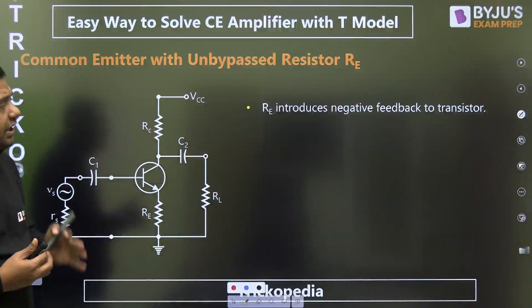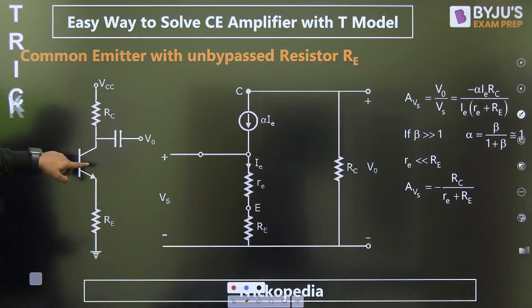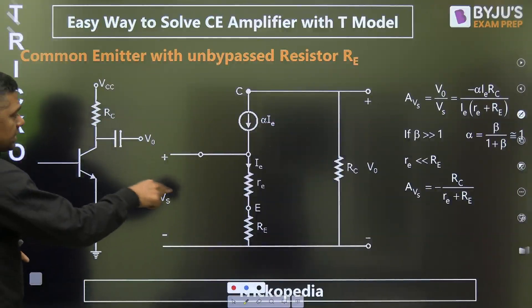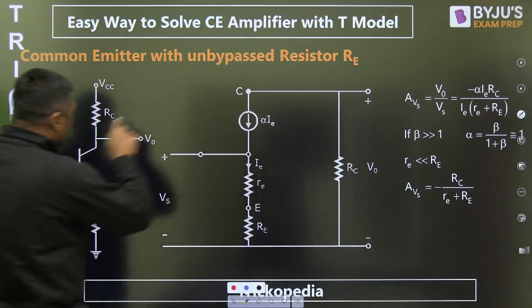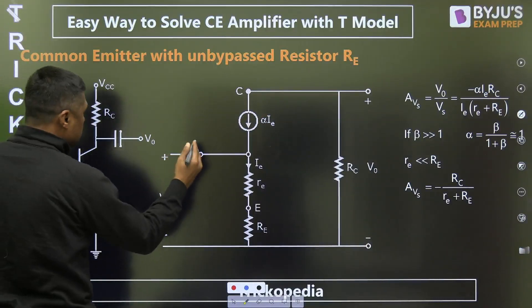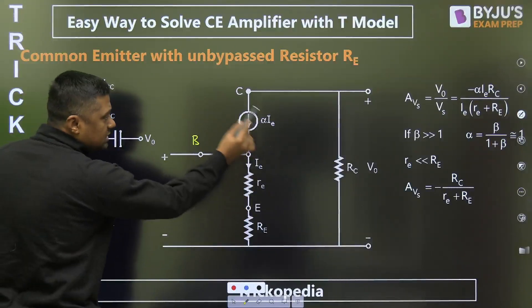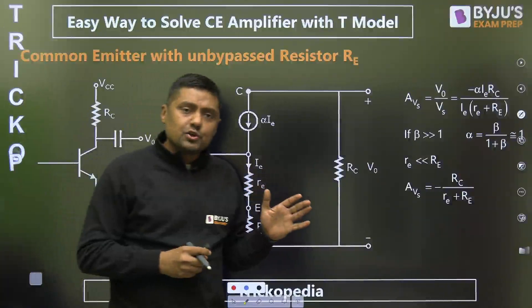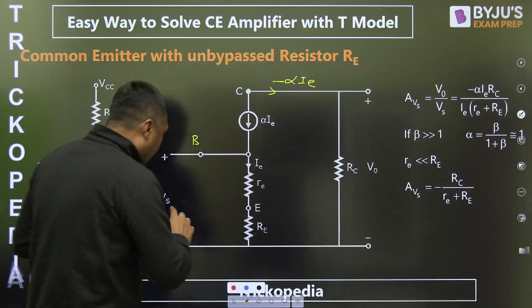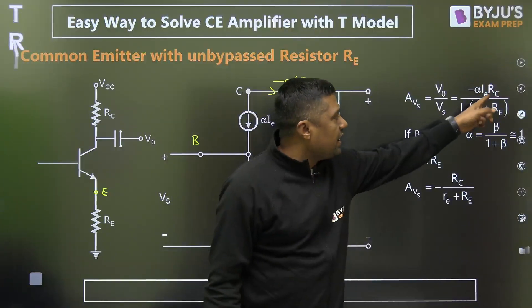This RE will introduce a negative feedback to the transistor — remember that. During AC analysis with the small signal model, VCC will tend to 0. When VCC is 0, you can connect the small signal model: alpha·IE from collector to ground, RC is connected, base to ground is the input, and from emitter to ground RE is connected as part of the transistor. V0 is equal to minus alpha·IE into RC, and Vs equals IE into (small re + capital RE). So V0/Vs equals minus alpha·IE·RC upon IE·(re + RE).